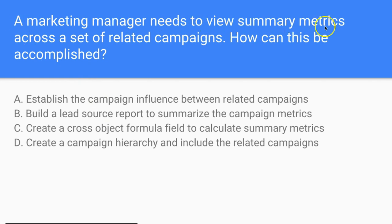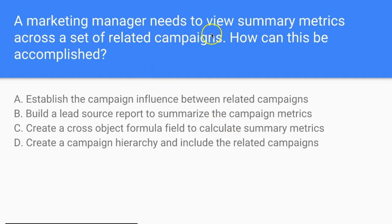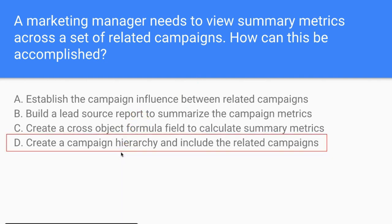Question: A marketing manager needs to view summary metrics across a set of related campaigns. How can this be accomplished? A: Establish campaign influence between related campaigns. B: Build a lead source report to summarize campaign metrics. C: Create a cross-object formula field to calculate summary metrics. D: Create a campaign hierarchy and include the related campaigns. The answer is D — create a campaign hierarchy and include the related campaigns. This is related to hierarchies, though it may look like a reporting question at first.